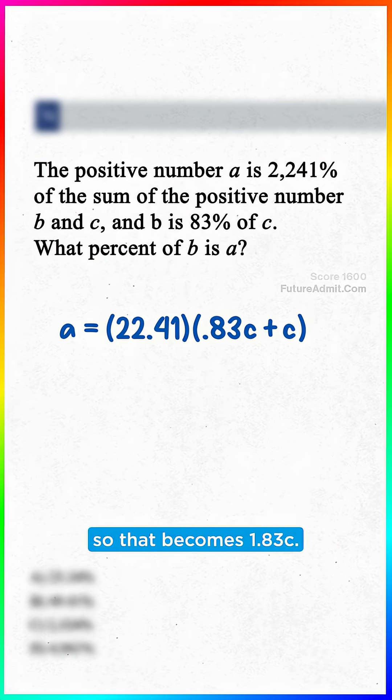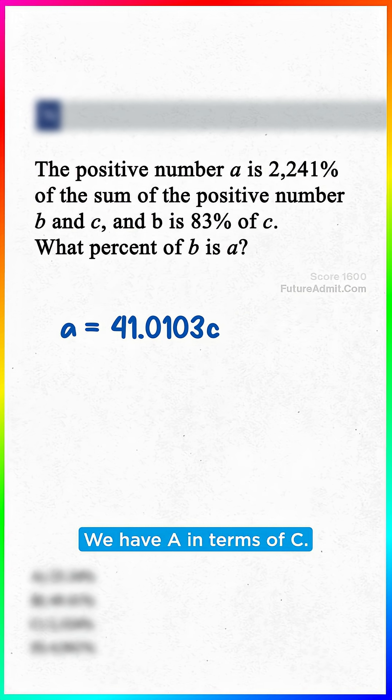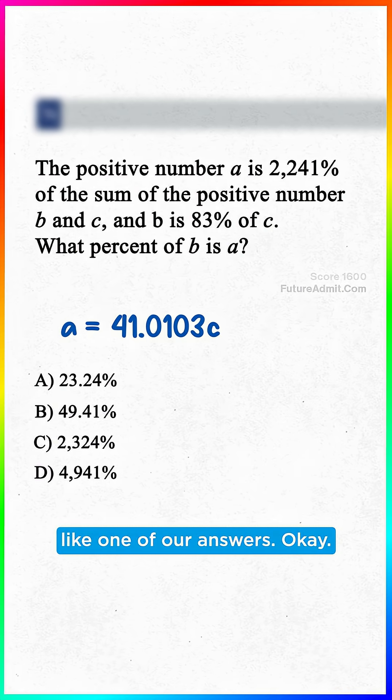Add the C's up, so that becomes 1.83C. Multiply this all out. We have A in terms of C, and that doesn't look like one of our answers.